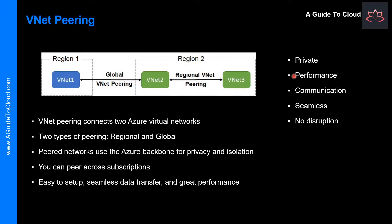There are lots of benefits for using VNet Peering. The first key benefit is that it is private — network traffic between peered Virtual Networks is private. Traffic between the Virtual Networks is kept on the Microsoft Backbone Network. No public internet, gateways, or encryption is required in the communication between these Virtual Networks.